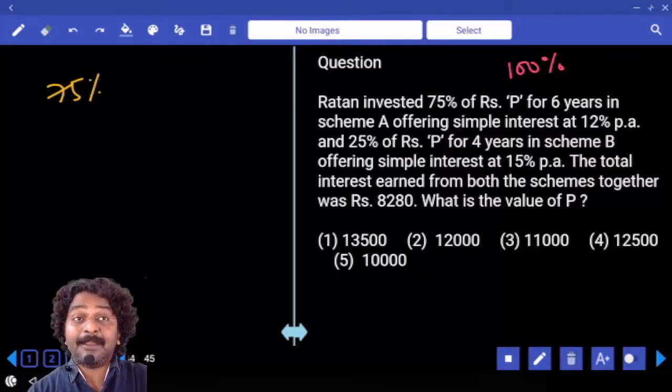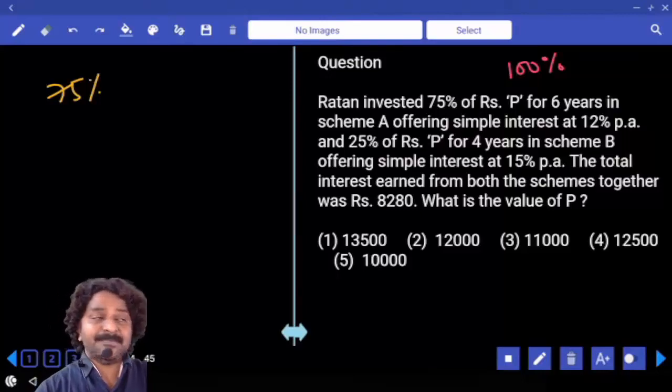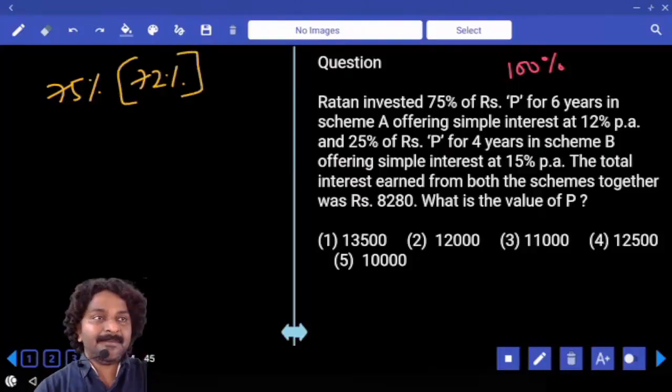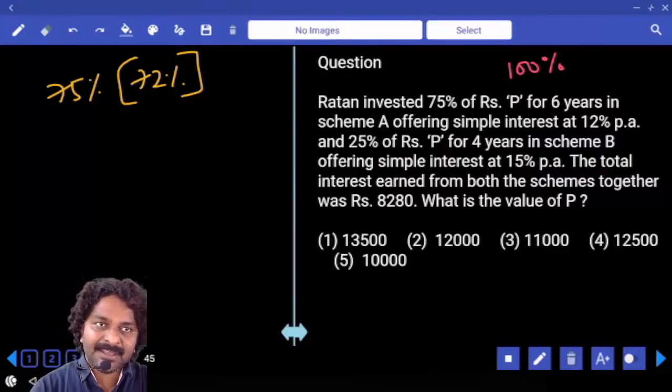6 years at what percent per annum? 12%. So in 6 years what is the simple interest obtained? 72% of 75% only, that is the interest received from the first scheme, agreed?